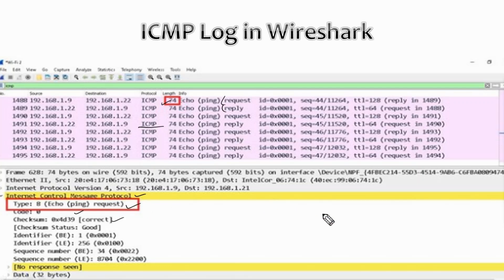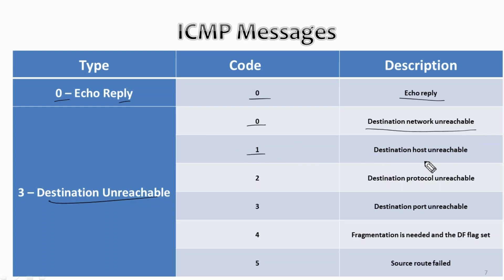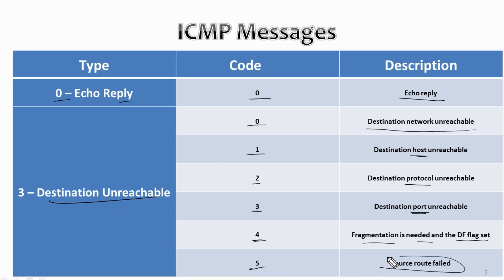Now let's look at the types of ICMP messages. Type 0 is echo reply (code 0). Type 3 is destination unreachable, with sub-codes: code 0 means destination network unreachable, code 1 means destination host unreachable, code 2 means destination protocol unreachable, code 3 means destination port unreachable, code 4 means fragmentation needed and the DF flag is set, and code 5 means source route failed.